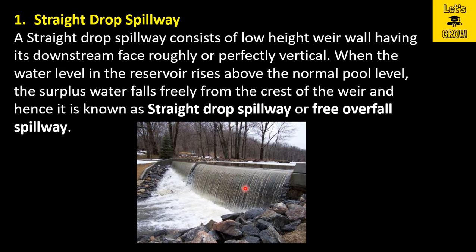This is the simplest type of spillway, in which you provide a vertical wall — a weir of low height. Whenever the water in the upstream exceeds the normal pool level, the excessive water starts to fall from this spillway. This is called the straight drop spillway, or free overfall spillway, because water is falling freely. In the downstream there is a problem of erosion whenever this water falls freely, so you can make an apron or a secondary dam in the downstream to prevent erosion.